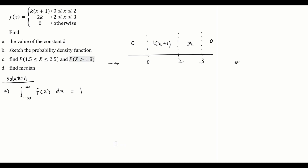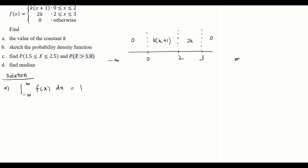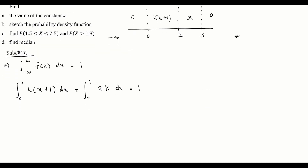From the number line, between negative infinity and 0 the function is 0, and between 3 and infinity it is also 0, so integrating those parts gives 0 and we can neglect them. We only need to integrate from 0 to 2 with function k(x+1), and from 2 to 3 with function 2k, and this must equal 1.